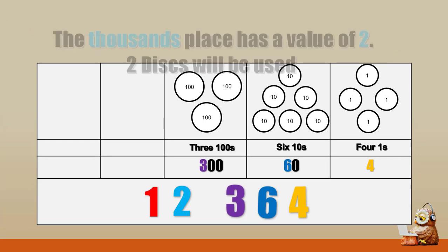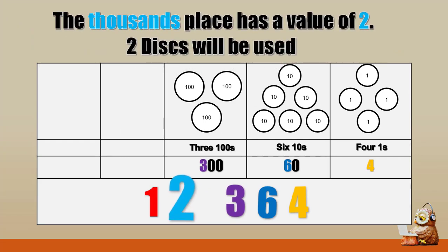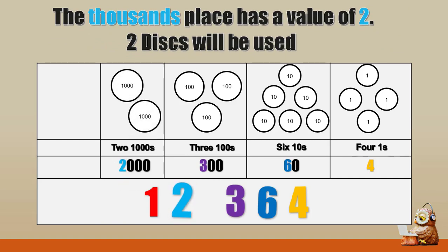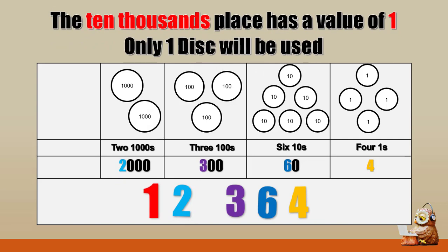Now let us continue. 2 is in the 1000's place, therefore 2 disks will be used. And lastly, 1 is in the 10,000's place, therefore 1 disk will be used. Now, it will be easy for you to represent numbers using number disks.